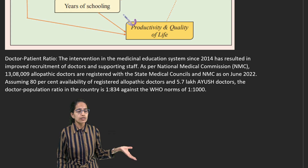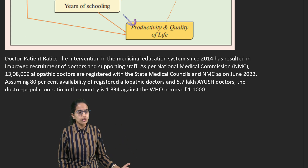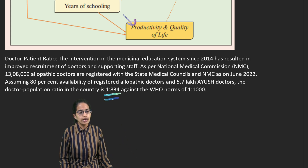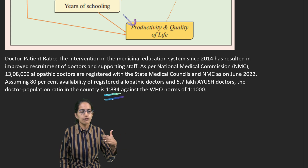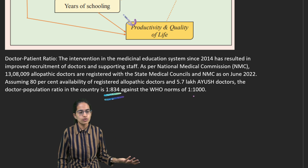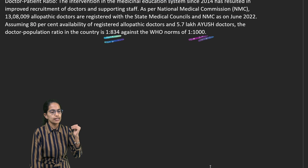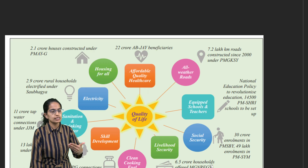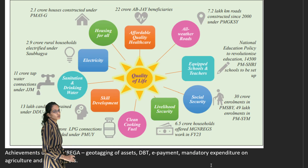In terms of India versus the world, the doctor-population ratio in India is 1 to 1,834, meaning one doctor per 1,834 people. However, the WHO norm recommends a 1 to 1,000 ratio, indicating a clear requirement for more medical graduates.